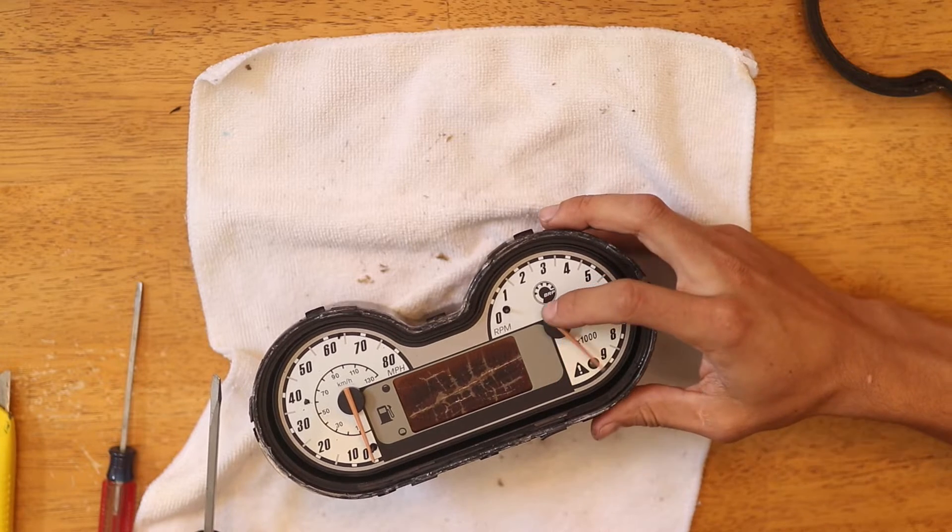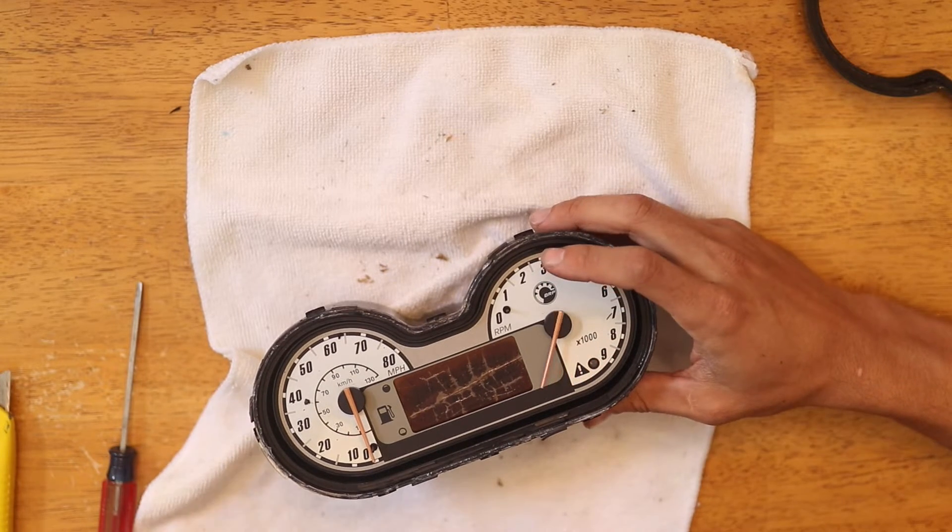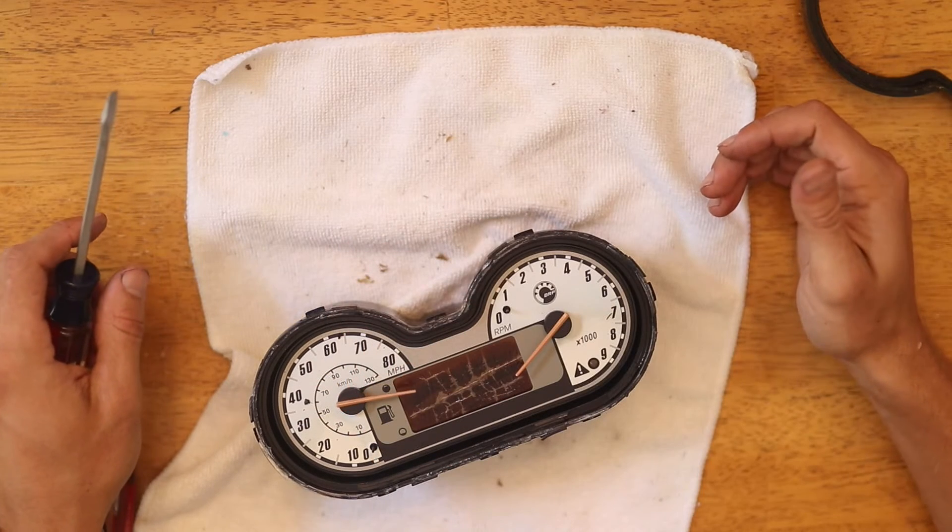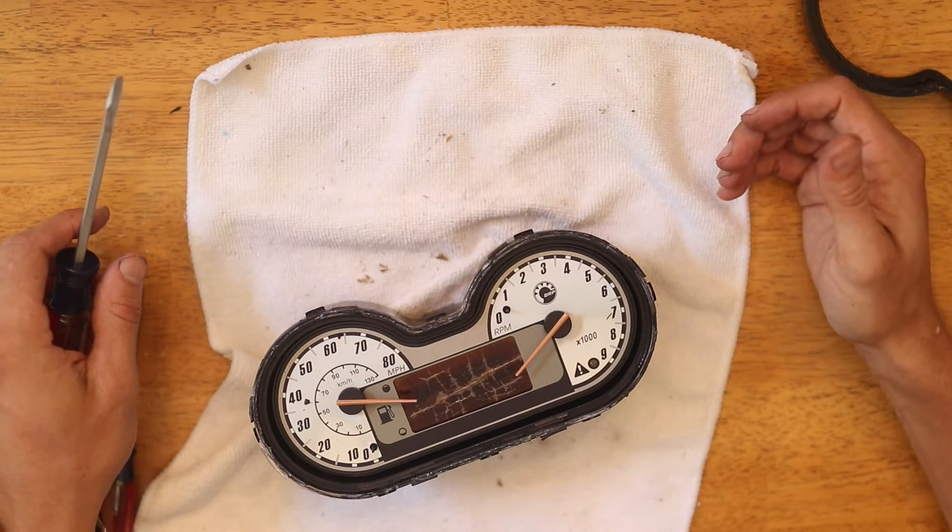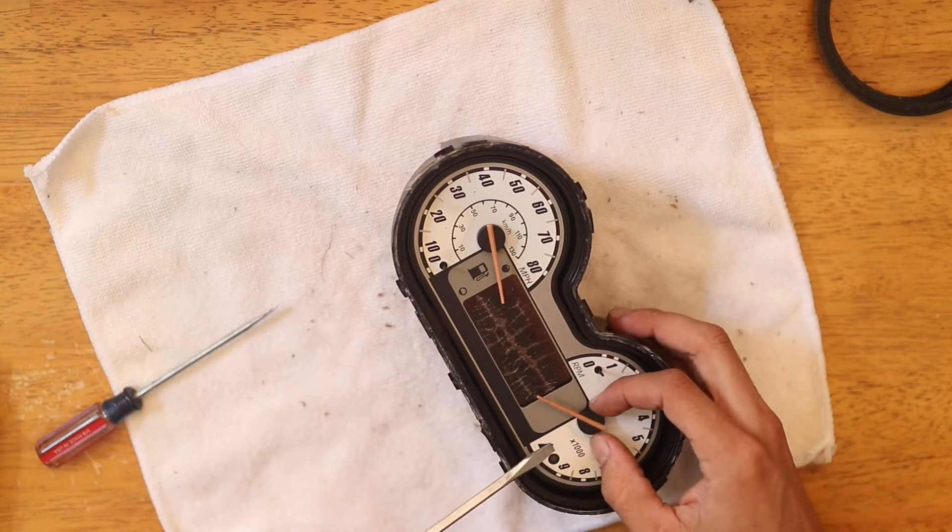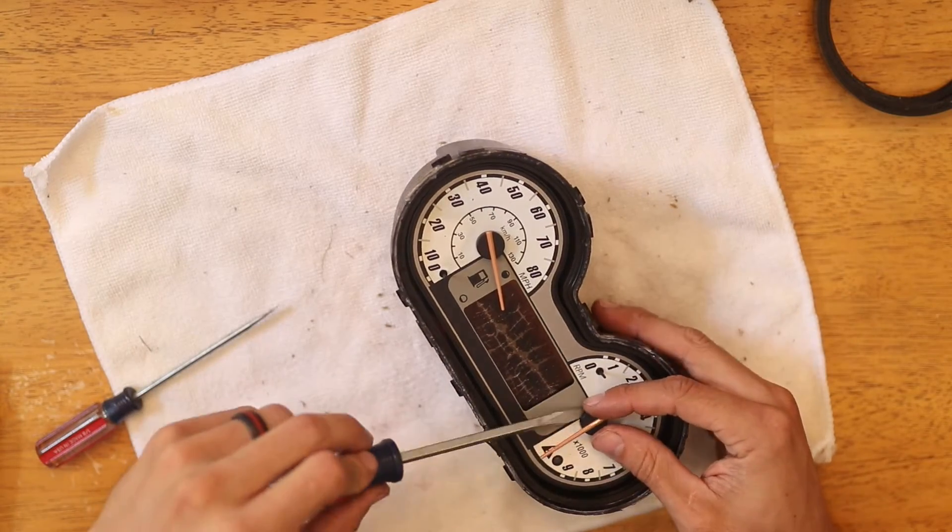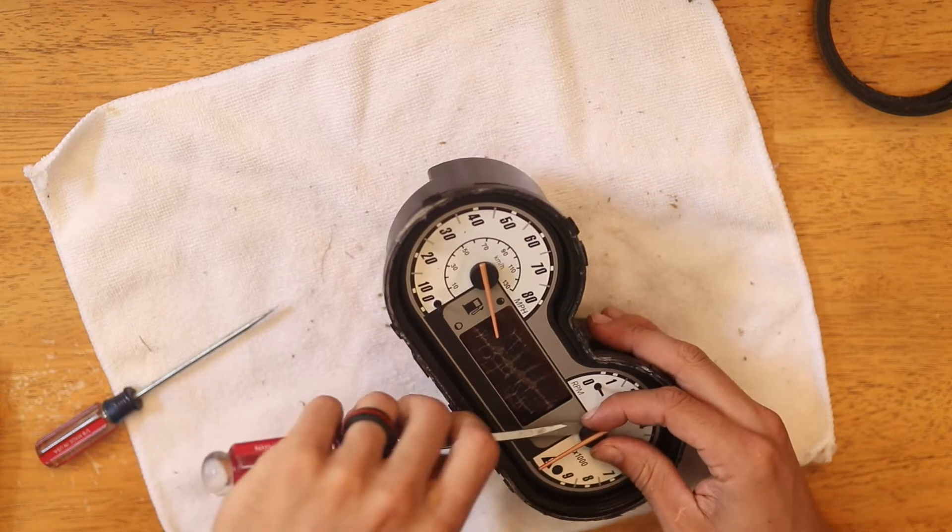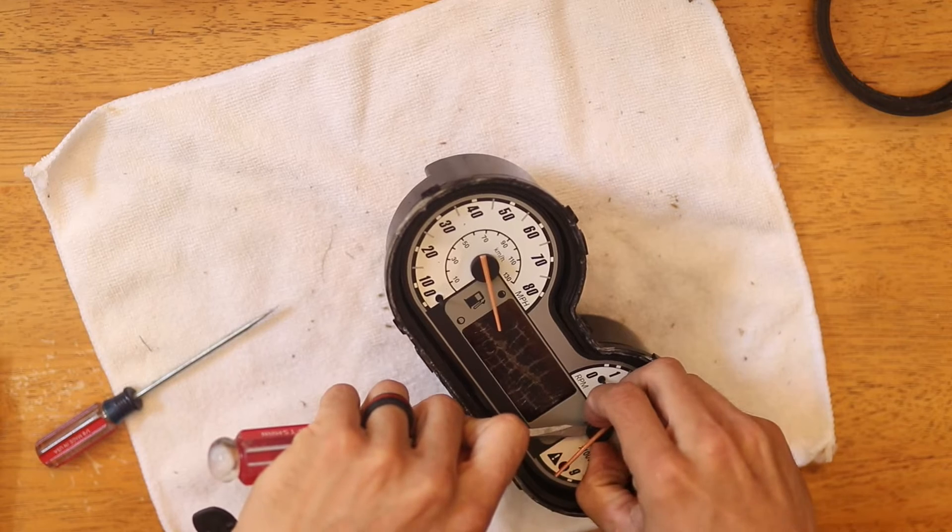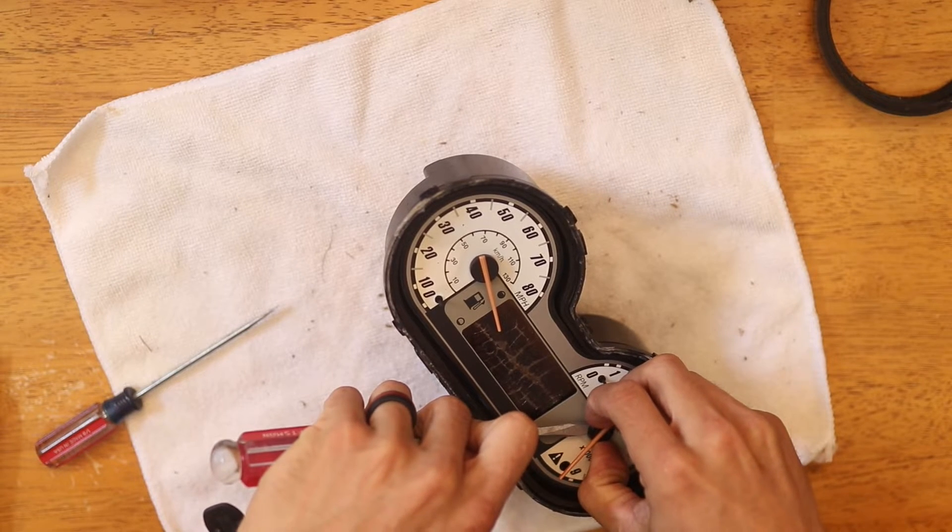Before you take the needles off, you should take a picture of where each one rests. That way when you put them back, your gauges will be accurate for your tachometer and your speed. My method of removing these needles was just to pry it off with a screwdriver. Unfortunately, it resulted in me breaking each of the needles, but they were easy to glue back together.